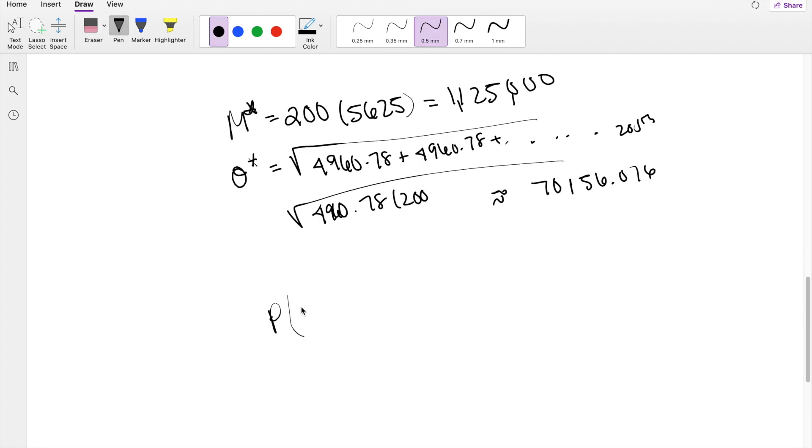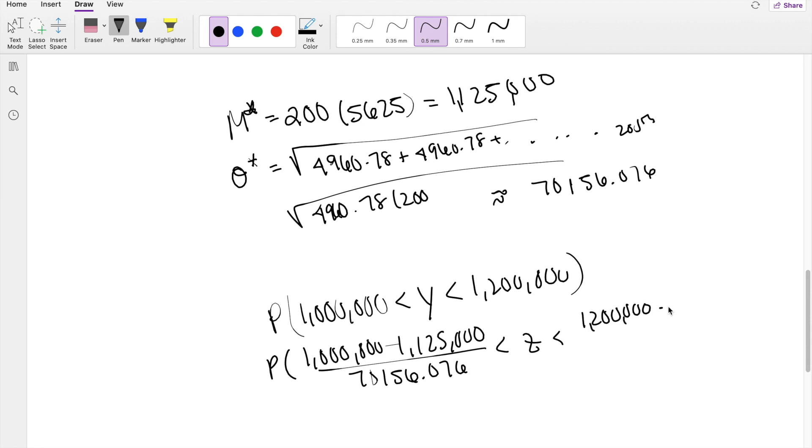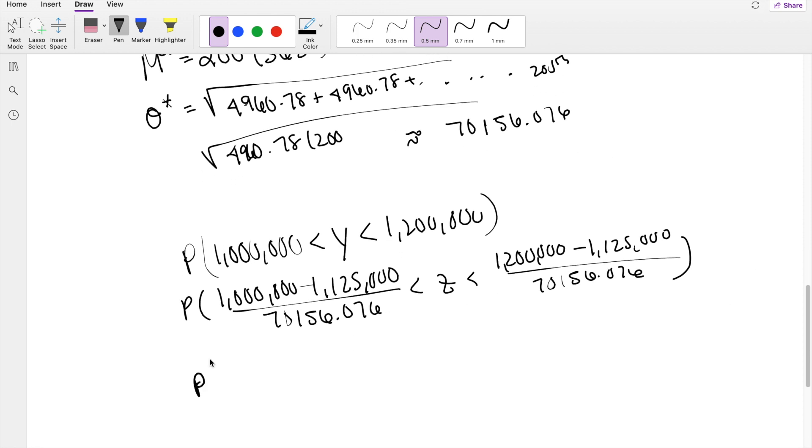What is the probability the payout is between 1,000,000 and 1,200,000? So normalizing this using what we found, it's going to be equal to 1,000,000 minus 1,125,000 divided by 70,156.076. And the upper limit is 1,200,000 minus 1,125,000 divided by 70,156.076. The lower limit is negative 1.78 and upper is 1.069.